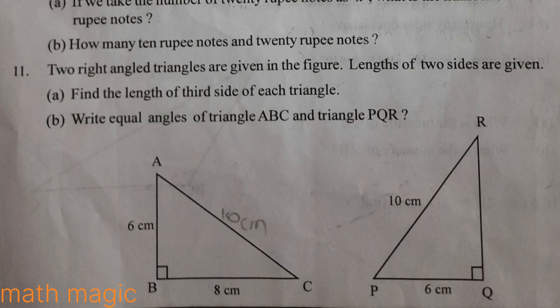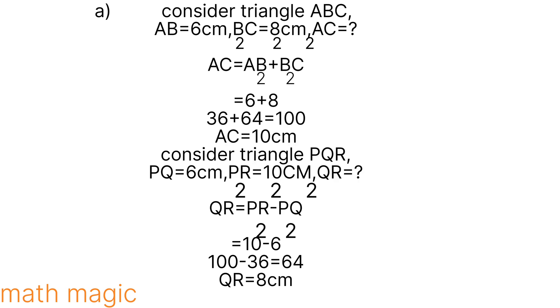Now we have the next question. Two right-angled triangles are given in the figure. The lengths of two sides are given. Find the length of the third side of each triangle. Write the angles of triangle ABC and triangle PQR. Triangle ABC will be found in the figure — AC is 68 cm. Here is the right-angled triangle.